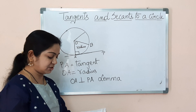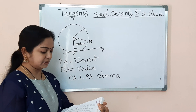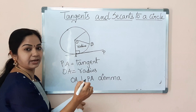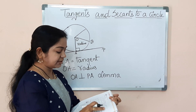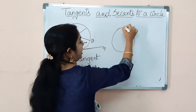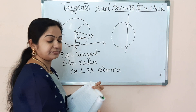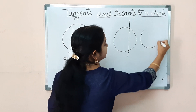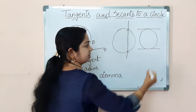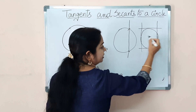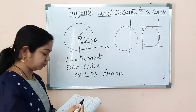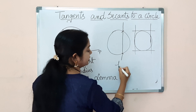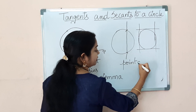Using this, let's look at some important fill-in-the-blank questions from Exercise 9.1. A tangent to a circle intersects it in only one point. A line intersecting a circle in two points is called a secant. A circle can have at most two parallel tangents — you can draw one pair of parallel tangents on one side and another pair on the other side, so at the most two. The common point of a tangent to a circle and the circle is called the point of contact, which is also very important in the lemma.